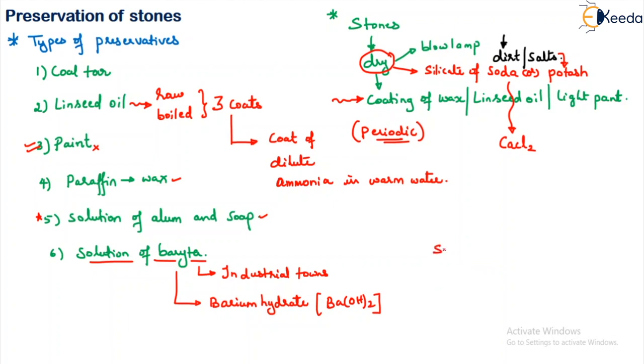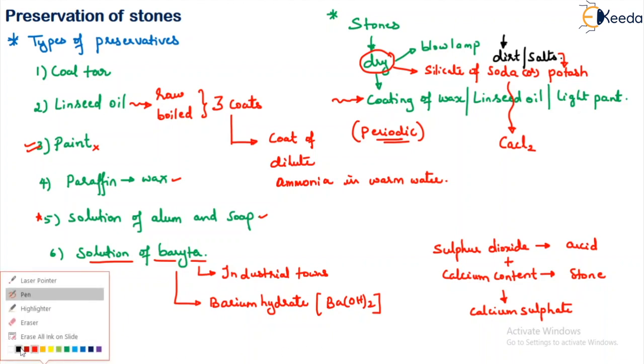Generally, what will happen is the sulfur dioxide which is present in the acid will react with the calcium content in the stone. And this will lead to the formation of calcium sulfate. So, for this calcium sulfate, whatever dust particles are present in the atmosphere will get attracted or the soot particles which are present. And what will happen is a hard layer will be formed on the surface of the stone. And in time, the calcium sulfate formed will go on flaking away. Flaking away means it will go on removing like scales. And then finally, a fresh surface of stone will again come into existence.